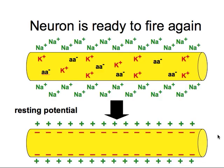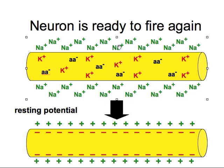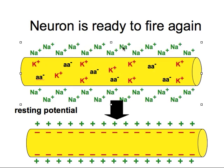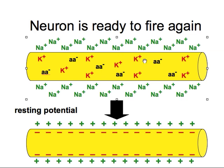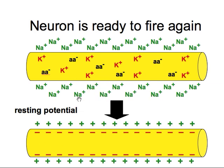Now the neuron is ready to fire again. Potassium is on the inside, sodium is on the outside, amino acids are negatively charged on the inside, positively charged on the outside — everything is the way it needs to be. And that is how a single neuron fires.